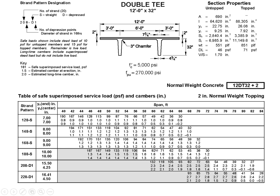One of those is the classic double T. With a double T that's 32 inches deep, plus a topping layer bringing it to 34 inches deep, such a system can span 60 feet and safely support a superimposed live load of 82 pounds per square foot with a simple undepressed strand pattern. For many applications, 82 pounds per square foot is adequate. One of the beauties of double Ts is that they can span these long distances, allowing us to simplify construction and span 60 feet without any interior columns.